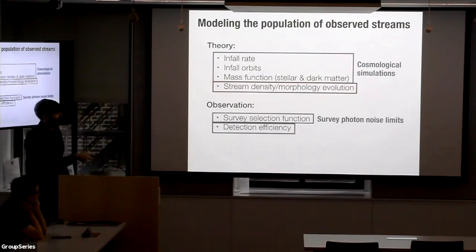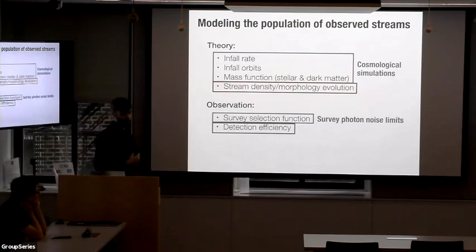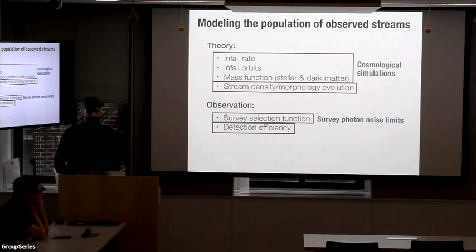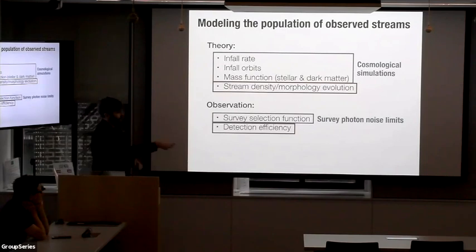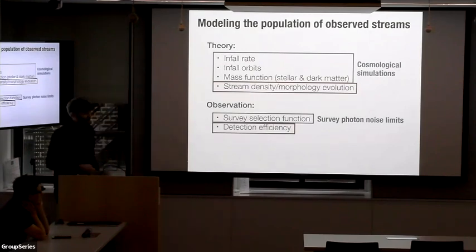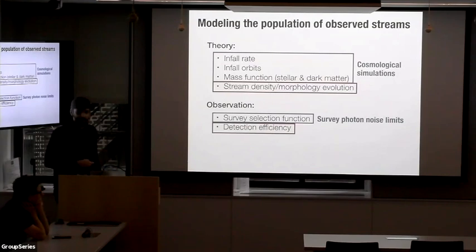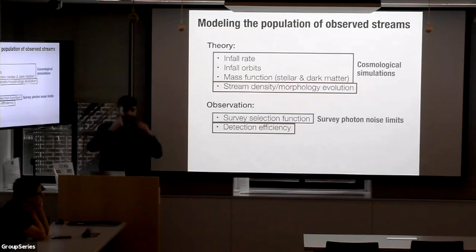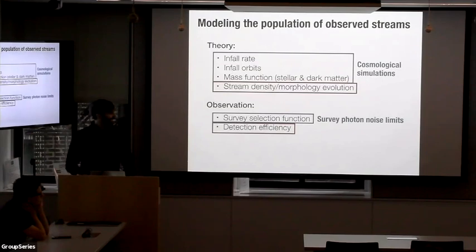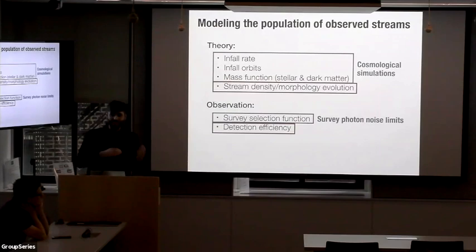The last thing on the observational side: the selection function tells us could we see a stream in a given part of the sky, but there's another piece — did we actually see a stream? What's the detection efficiency of finding a given stream in that part of the sky? The challenge is that we don't actually have any really robust automated stream-finding methods. So if you wanted to estimate this quantity right now, you'd have to put probes into very few people's brains and try to model their pattern recognition cortexes in order to see whether they find a stream or not given a part of the sky.